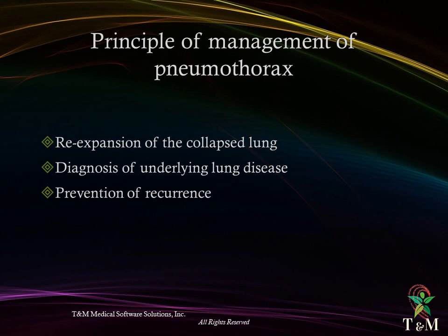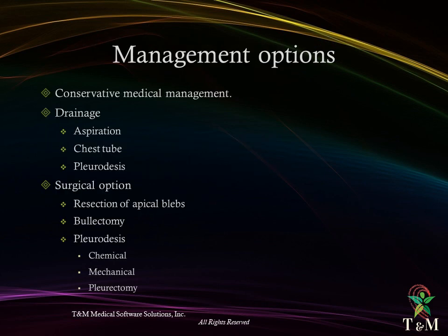Overall management options include: conservative medical management; drainage, which can be achieved by aspiration, chest tube drain, and pleurodesis; and surgical options, which can be achieved by resection of apical bullae, bullectomy, and pleurodesis — either chemical, mechanical — or pleurectomy.